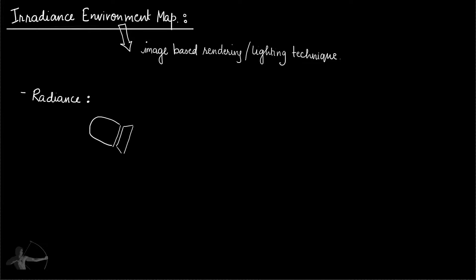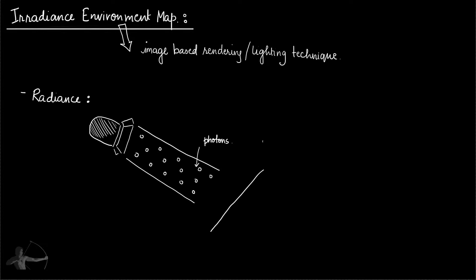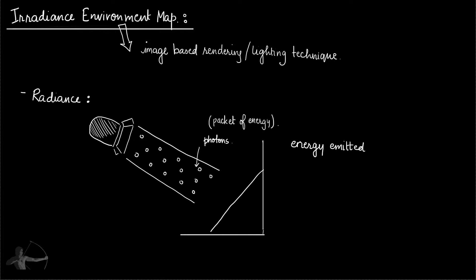In one of the previous chapters we understood that a light beam carries particles, and these particles are packets of energy called photons. Radiance is the energy emitted per unit time in a given direction from a per unit area of an emitting surface. Light is an emitting surface, so radiance measures the amount of energy emitted per unit time in a given direction from a per unit area.